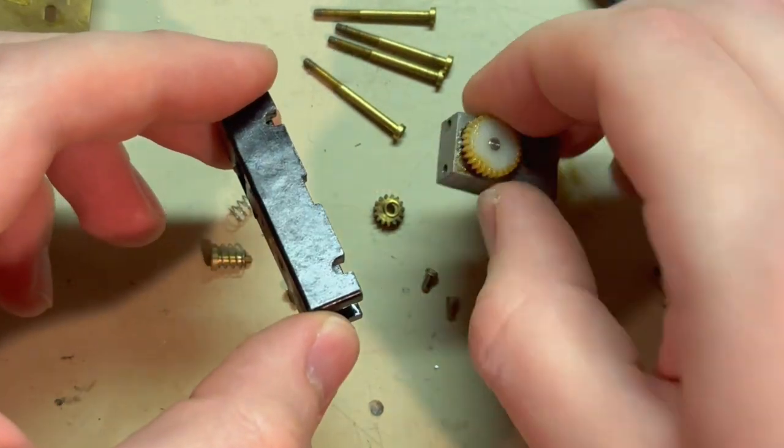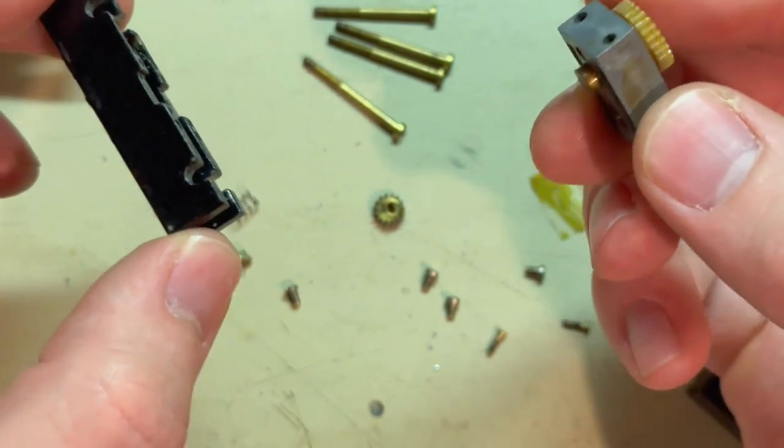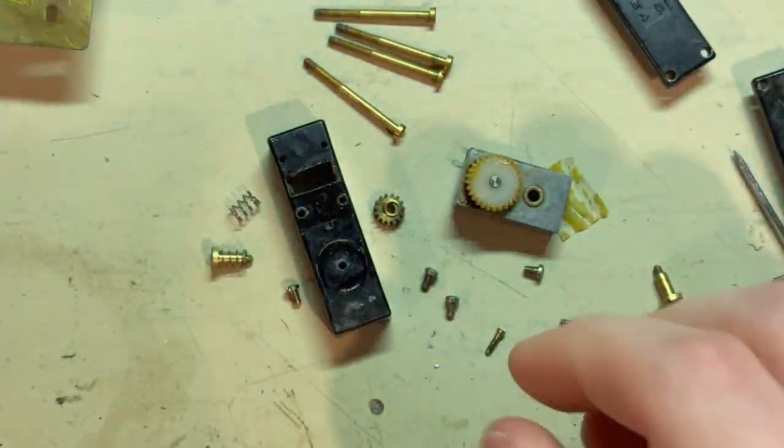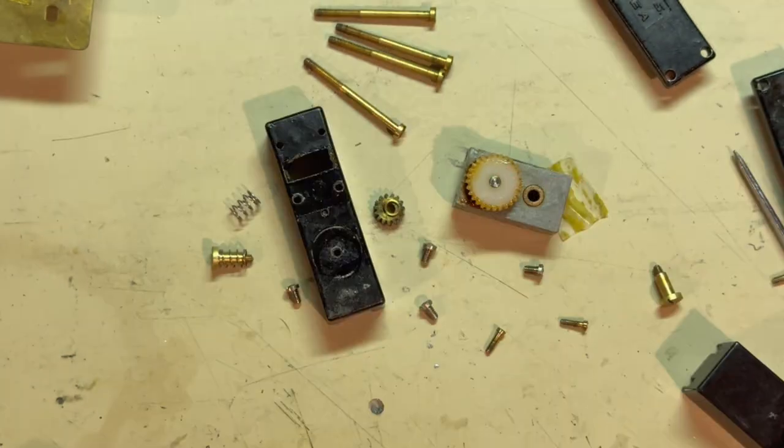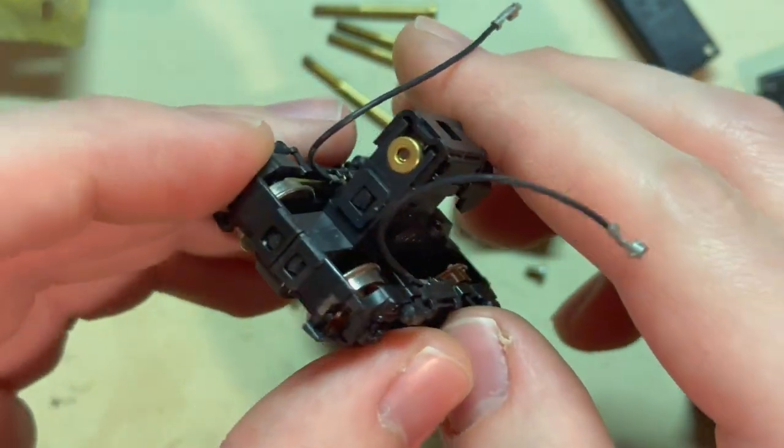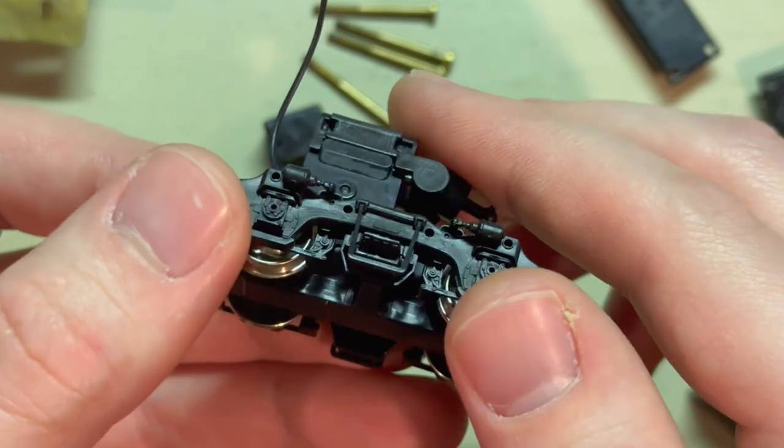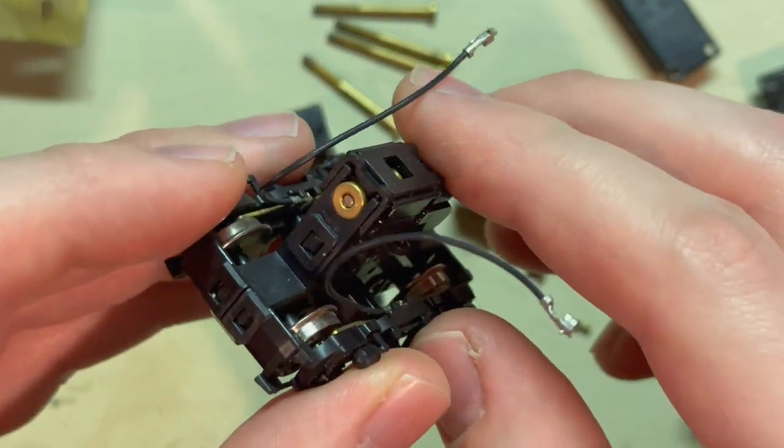Well, after checking around Northwest Shortline's catalog and eBay and some other places, I just couldn't find the parts that I need to get this fixed. So, what I'm going to do instead is modify the chassis to use these Kato-made trucks. And that will probably have this diesel running better than it ever has anyway, so this will be a good upgrade, I think.